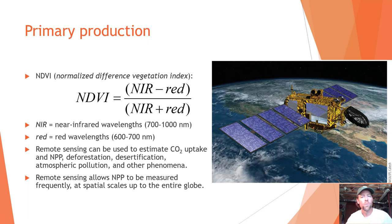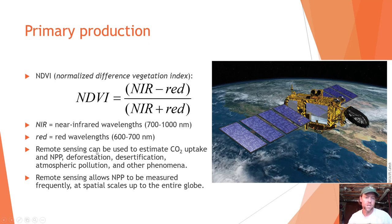One such index is the NDVI — the Normalized Difference Vegetation Index — calculated as the near-infrared minus the red wavelength, divided by the near-infrared plus the red wavelength. Remote sensing can be used to estimate carbon dioxide uptake and net primary productivity, and to monitor deforestation, desertification, atmospheric pollution, and other phenomena. Remote sensing allows NPP to be measured frequently at very large spatial scales.